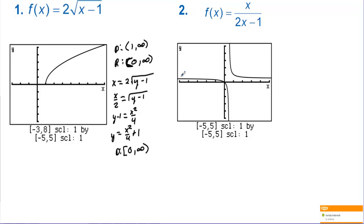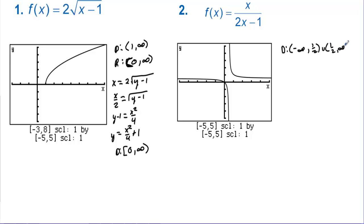Number two. This one also passes the horizontal line test, so its inverse is a function. Its domain is negative infinity to one-half, union with one-half to infinity — x cannot equal one-half or we'd have zero in the denominator. Its range also has a horizontal asymptote at one-half, so the range is negative infinity to one-half, union with one-half to infinity. Now let's find the inverse.